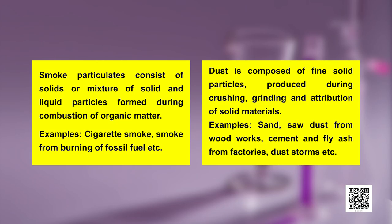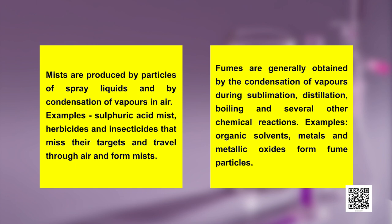Smoke particulates consist of solid or a mixture of solid and liquid particles formed during combustion of organic matter, for example cigarette smoke and smoke from burning of fossil fuels. Dust is composed of fine solid particles over 1 micrometer in diameter, produced during crushing, grinding and attrition of solid materials — examples include sand, sawdust from woodworks, cement and fly ash from factories, and dust storms. Mist is produced by particles of spray liquids and by condensation of vapours in air — examples are sulphuric acid mist, herbicides and insecticides. Fumes are generally obtained by condensation of vapours during sublimation, distillation, boiling and several other chemical reactions — examples are organic solvents, metals and metallic oxides.